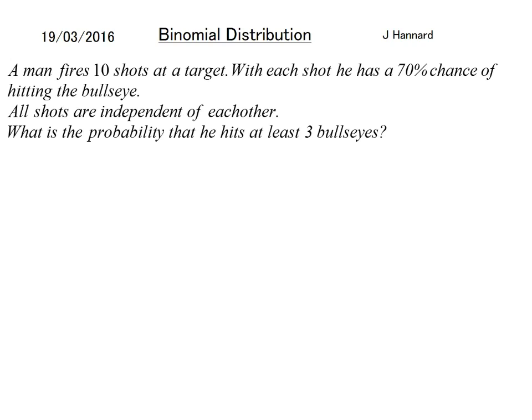And we talked about what would happen if he wanted 7 bullseyes or something like that. But what's the probability that he hits at least 3 bullseyes? So that's 3, 4, 5, 6, 7, 8, 9, 10. So we can binomially distribute it as 10, 0.7 because there's 10 shots and a 70% chance of success. So the P of at least 3 is the P of 3 or 4 or 5 or 6 or 7 or 8 or 9 or 10.